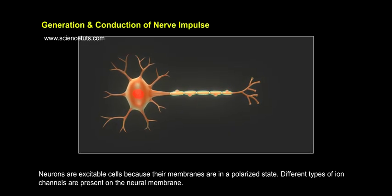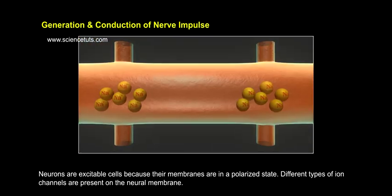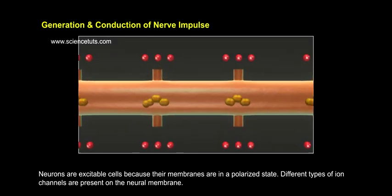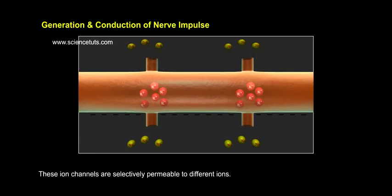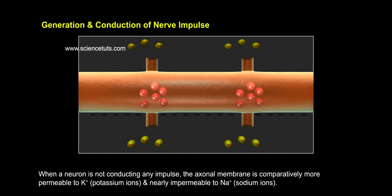Neurons are excitable cells because their membranes are in a polarized state. Different types of ion channels are present on the neural membrane. These ion channels are selectively permeable to different ions. When a neuron is not conducting any impulse, the axonal membrane is comparatively more permeable to K+ (potassium ions) and nearly impermeable to Na+ (sodium ions).